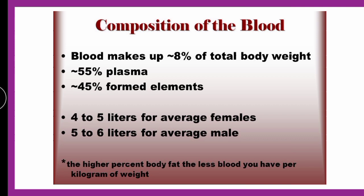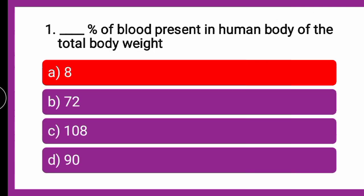If you consider the composition of blood, as covered in our earlier video, plasma is there, formed elements are there, and platelets constitute a very minute portion. Overall, plasma, formed elements, and all these together make up approximately 8% of the total body weight. So the correct answer is 8% of blood. You can now verify your answer.